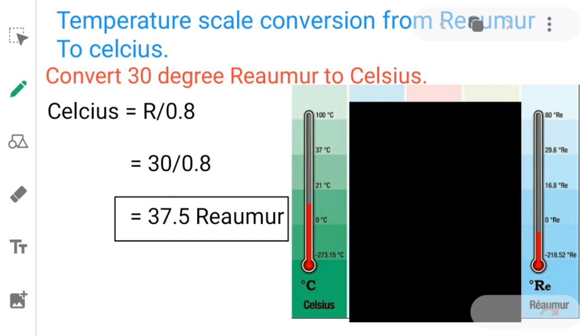Let's take the example, convert 30 degree Reaumur to Celsius. We have to find out Celsius equals R divided by 0.8. So R is the value of Reaumur here. Reaumur given is 30, so 30 divided by 0.8, we get 37.5 Celsius.